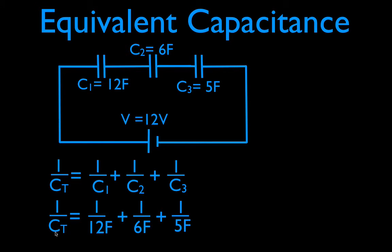1 over CT, the equivalent capacitance, is equal to 1 over 12 farads, plus 1 over 6, plus 1 over 5 farads. Now in your calculator, punch in 1 divided by 12, plus 1 divided by 6, plus 1 divided by 5, and you should come out with 1 over CT equal to 0.45 farads.